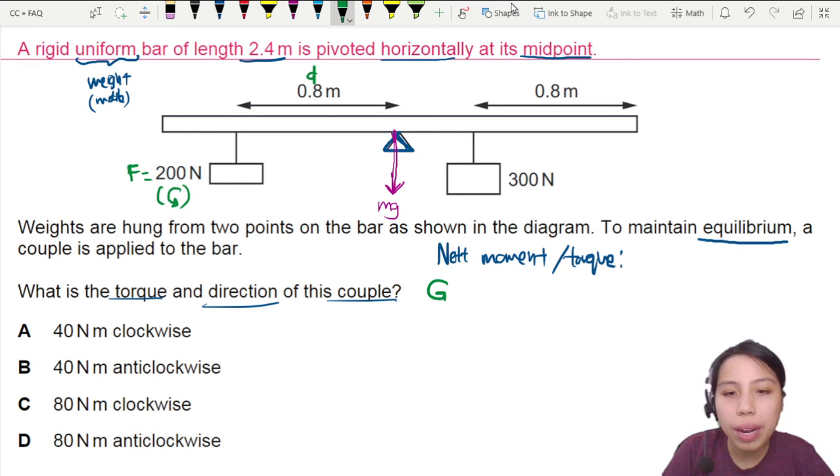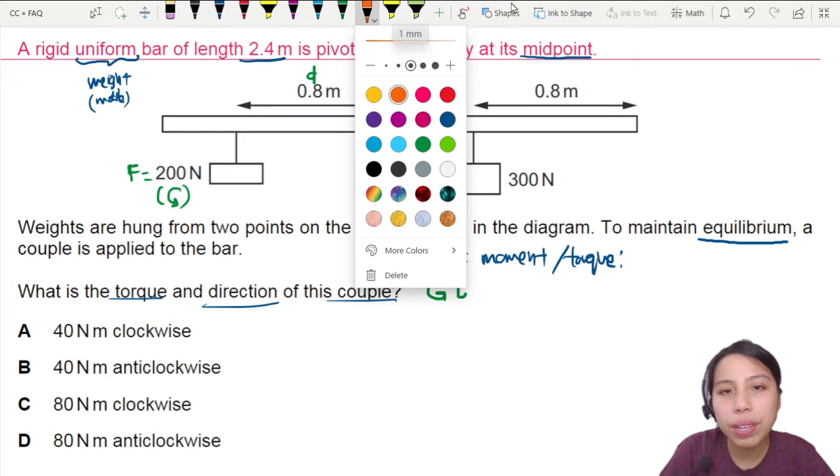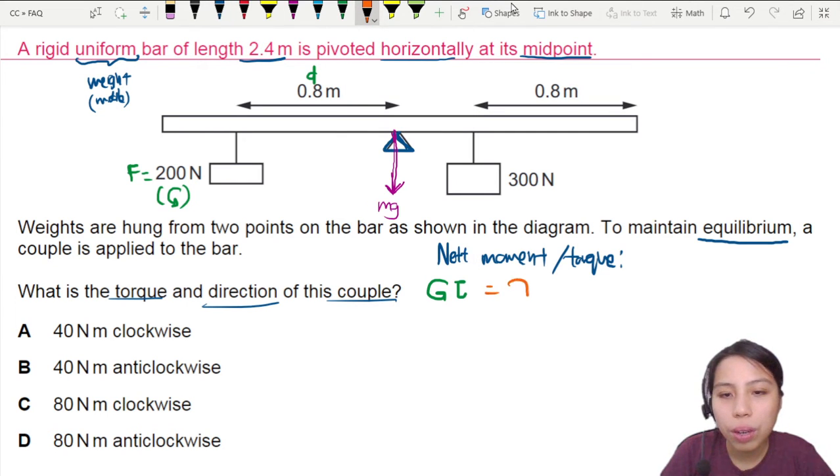So we see the anti-clockwise torque equals to the clockwise torque. Let's give it another color. Clockwise torque. That will be thanks to this 300 newton, which will cause this bar to rotate. Or hopefully it will cause a moment of clockwise.